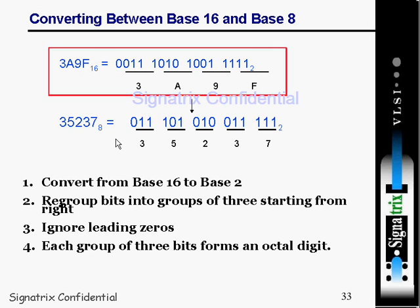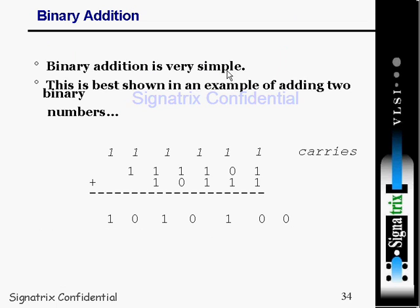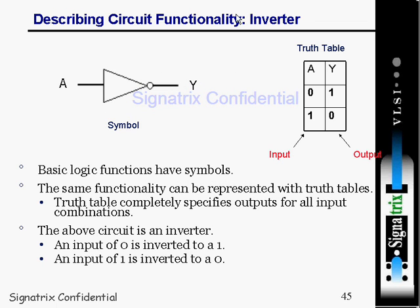Now we move on to binary addition and describing circuit functionality. Starting with the inverter: this is the symbol of an inverter. The inverter's objective is — when the input is 1, the output is 0; when the input is 0, the output is 1. A truth table is shown. When designing a combinational circuit, implementing a truth table helps reduce mistakes.